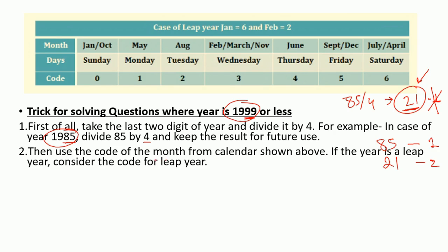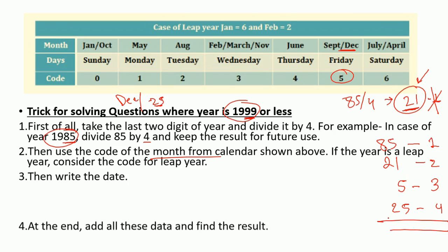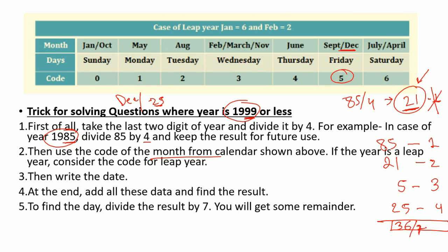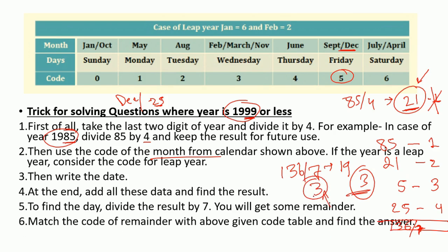The third step is the code for the month. Let us say the month is December — looking at the table, December has code 5. The fourth value is the date: let us say 25th. Now add everything together: 85 plus 21 plus 5 plus 25 gives 136. Divide 136 by 7 — the remainder is 3. Code 3 corresponds to Wednesday. So 25th December 1985 was a Wednesday.